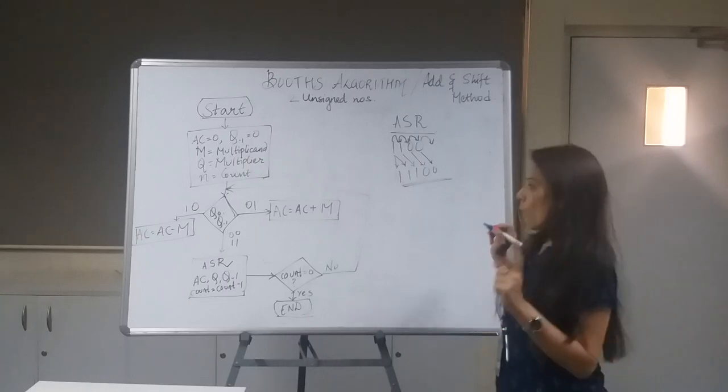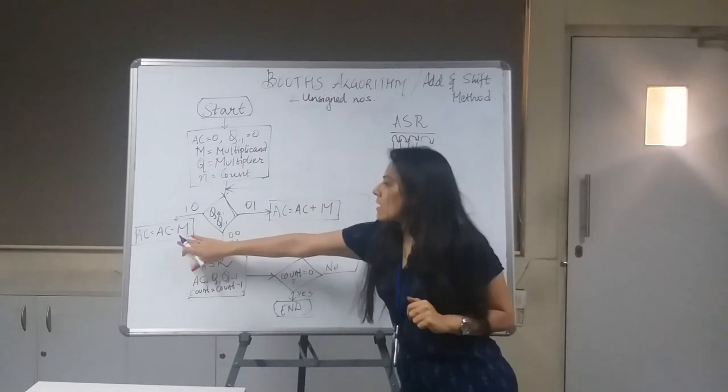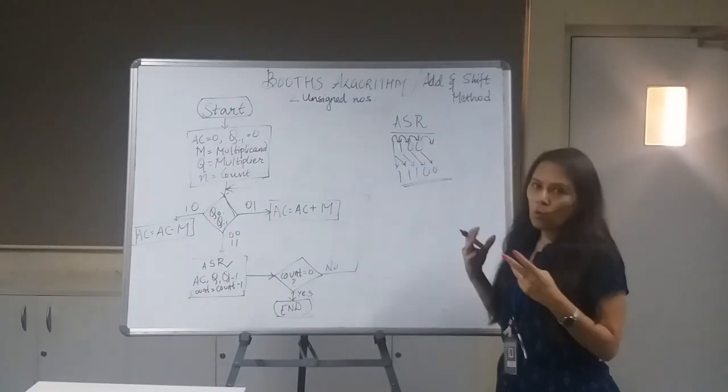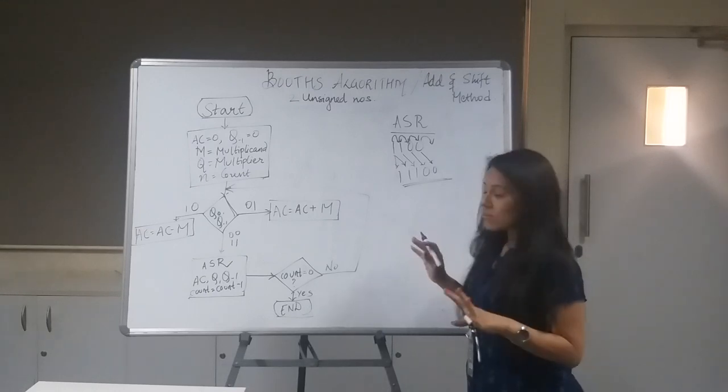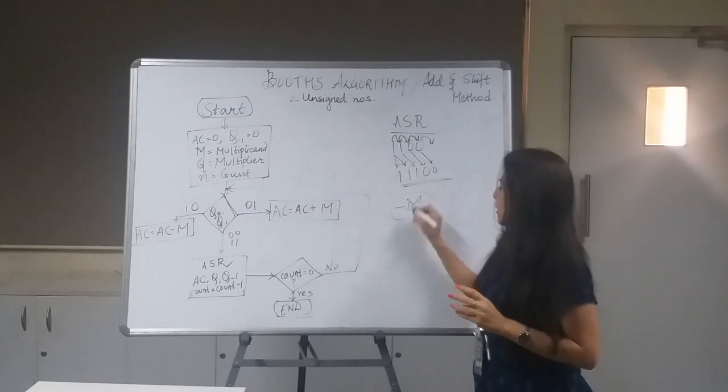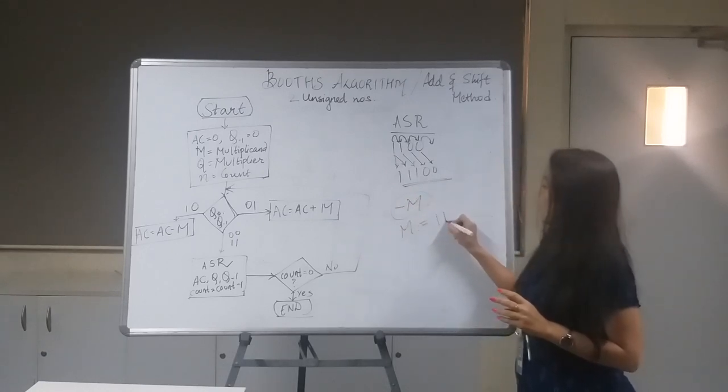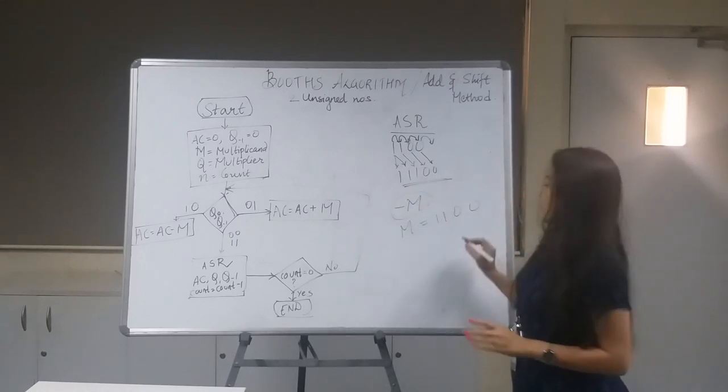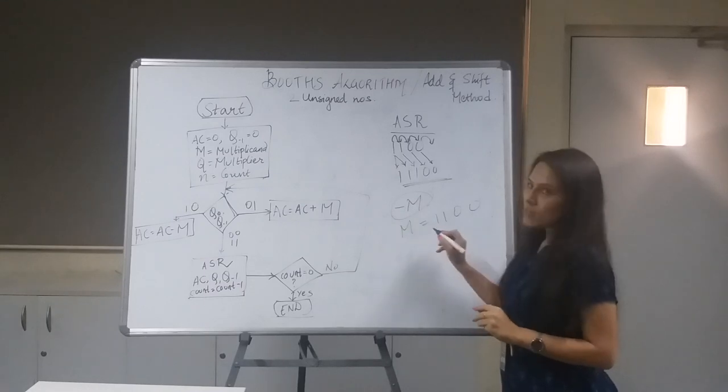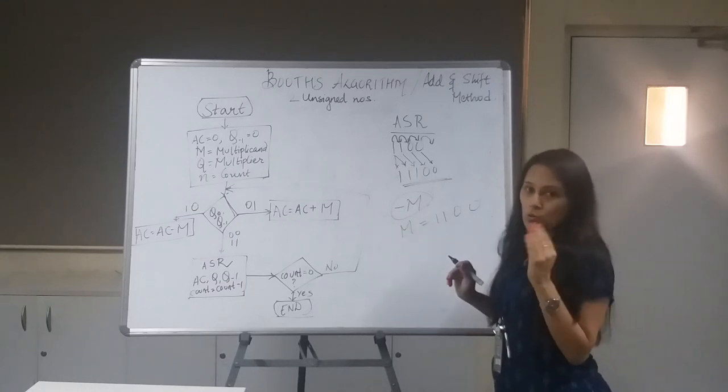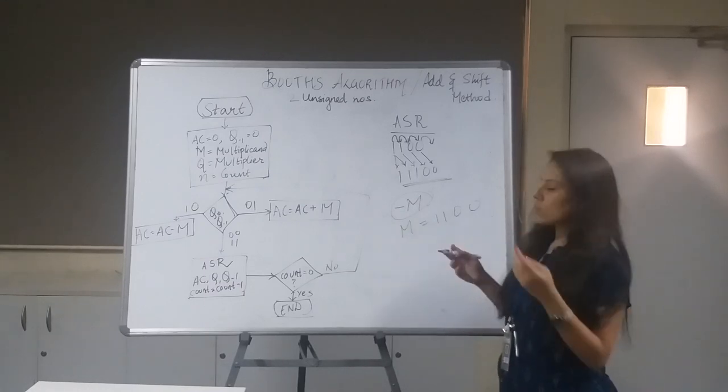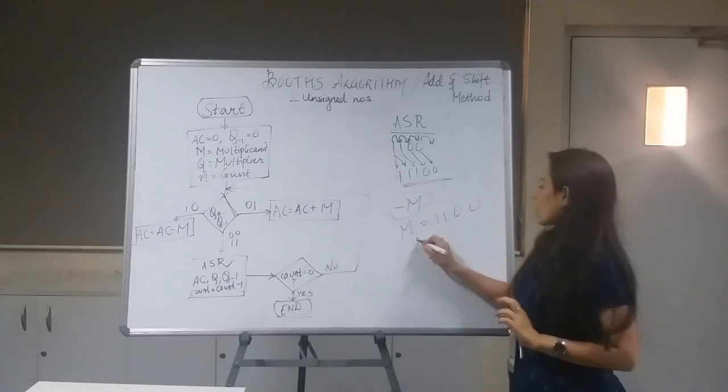One more concept is there: AC is AC minus M. Subtraction is quite difficult, isn't it? So what we do is minus M. Look, suppose M is 1100 for example. Then to find minus M we need to find its two's complement.